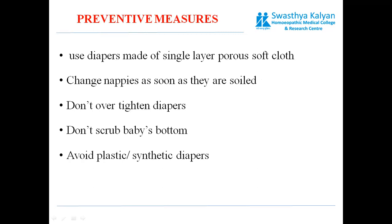Preventive advice for parents: use diapers made of single-layer porous soft cloth; change nappies as soon as they are soiled; do not over-tighten diapers; do not scrub the baby's bottom; avoid plastic or synthetic diapers and use cotton diapers instead.